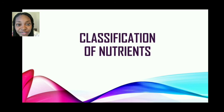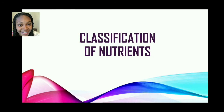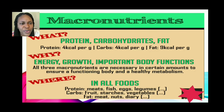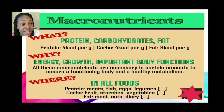Now let us look at the classification of nutrients. There are two major classifications. First up, we have macronutrients. The nutrients classified as macronutrients are protein, carbohydrates, and fat. They are needed for growth, energy, and other important body functions. All three macronutrients are necessary in certain amounts to ensure a functioning body and a healthy metabolism.